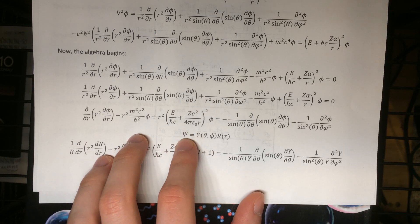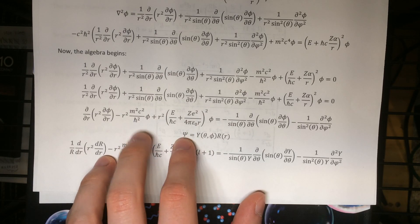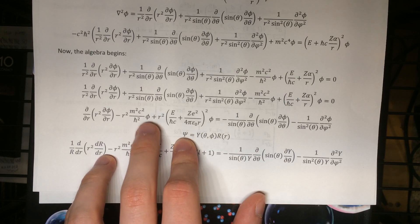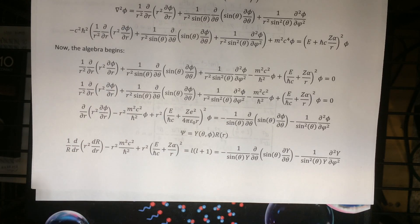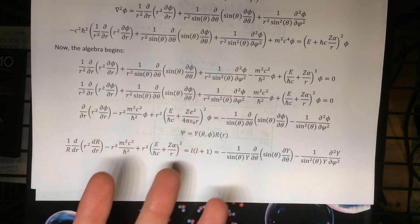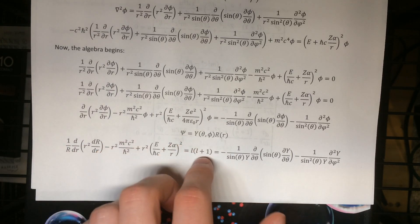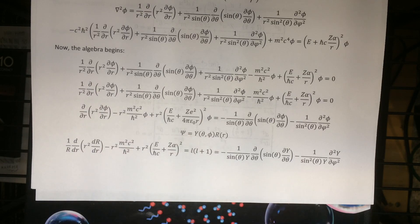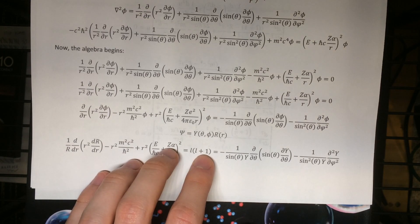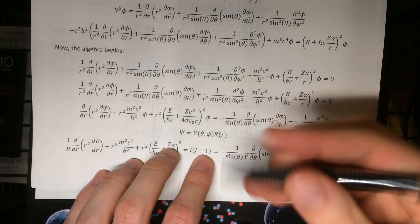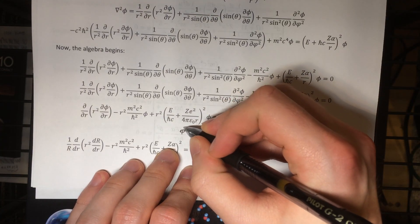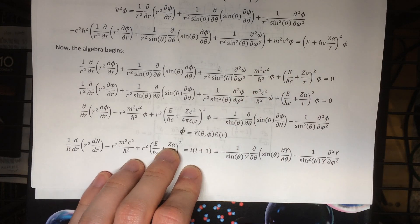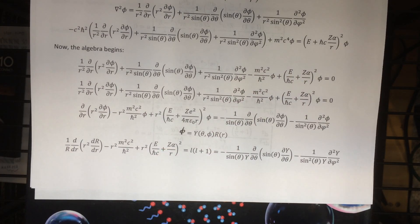Quick note: I meant phi — it's a typo, I put psi there but really I mean phi like what's in the actual equation we're solving. I've already changed it in the word document but I didn't want to reprint the page just for that. I'll write a phi over it — there we go, phi. Okay, now that's clearer.